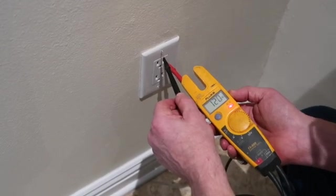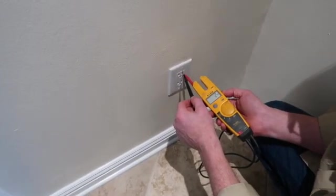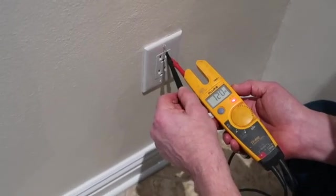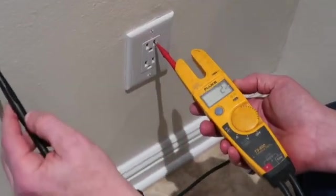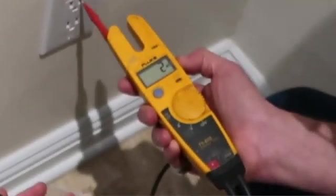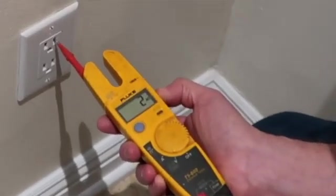Once again, it's measuring 120. If I touch the screw here, this also should be 120, and once again it is. If you touch the wall, you'll get nothing because the wall is not grounded. If you touch plastic, you'll get nothing because it's insulated and it's not grounded.